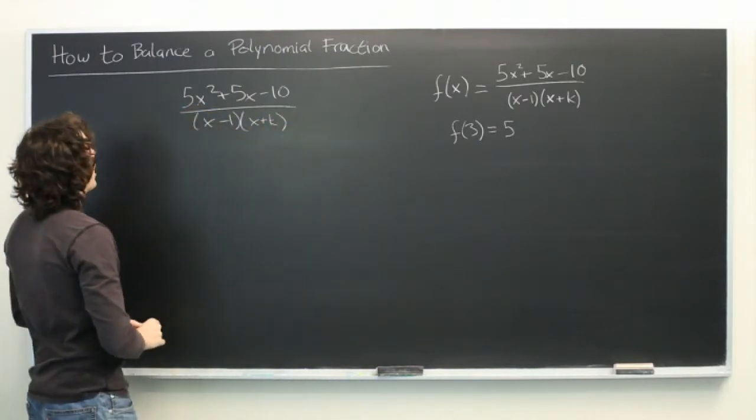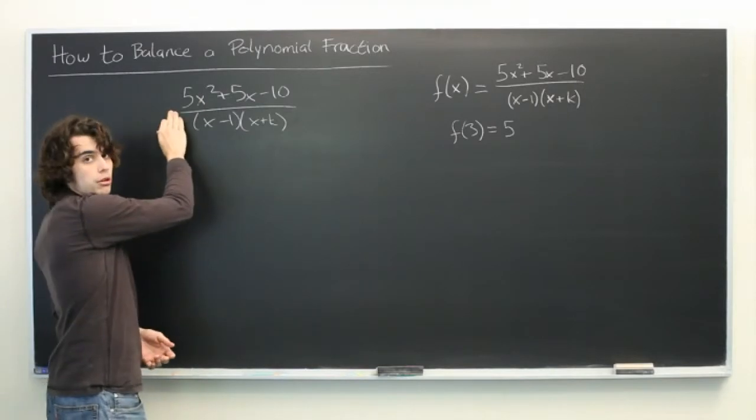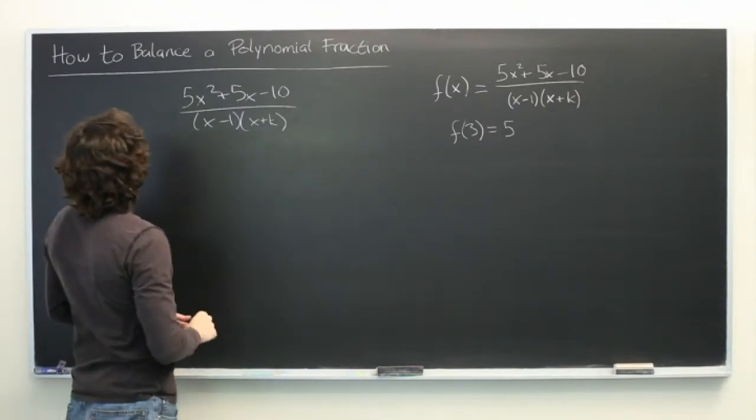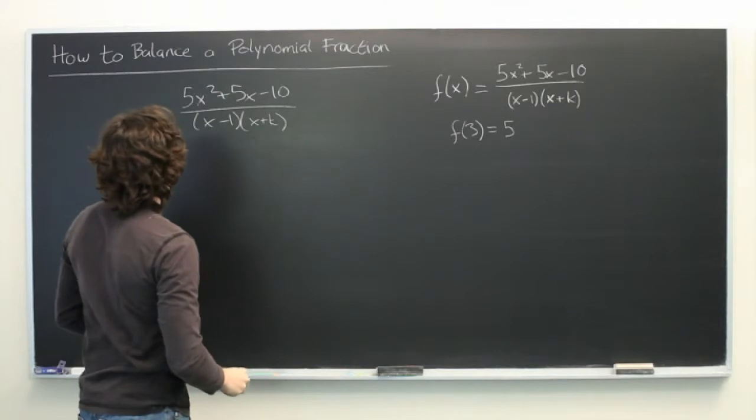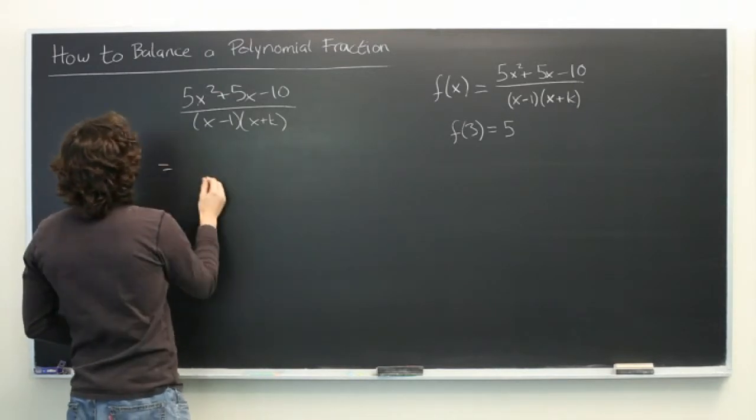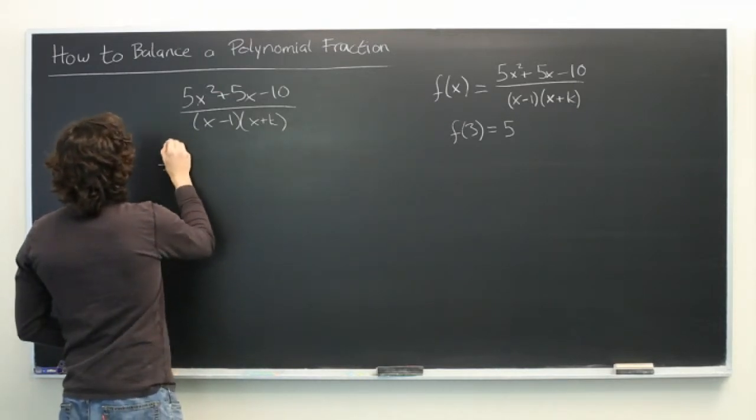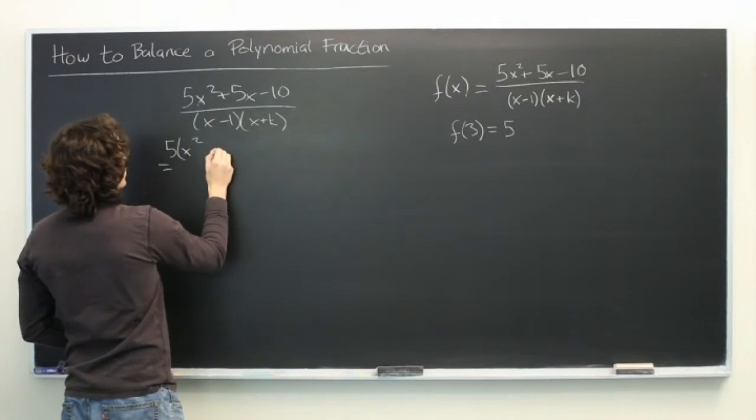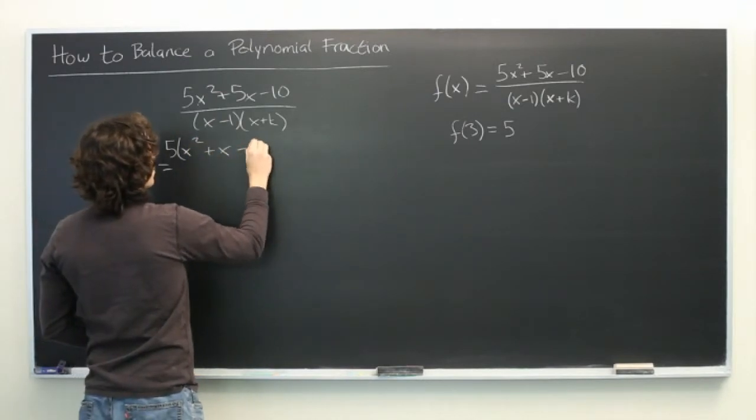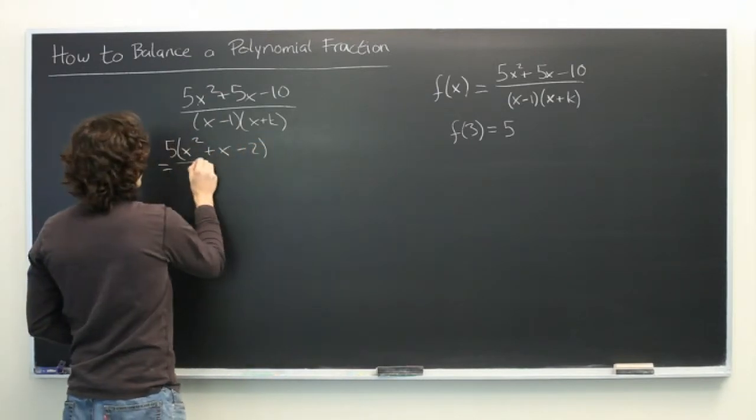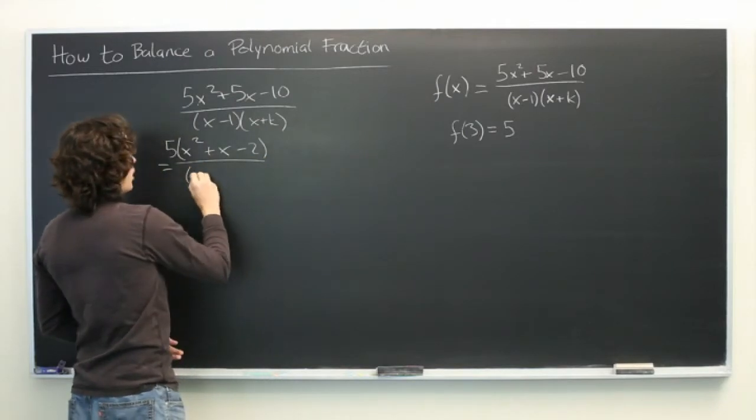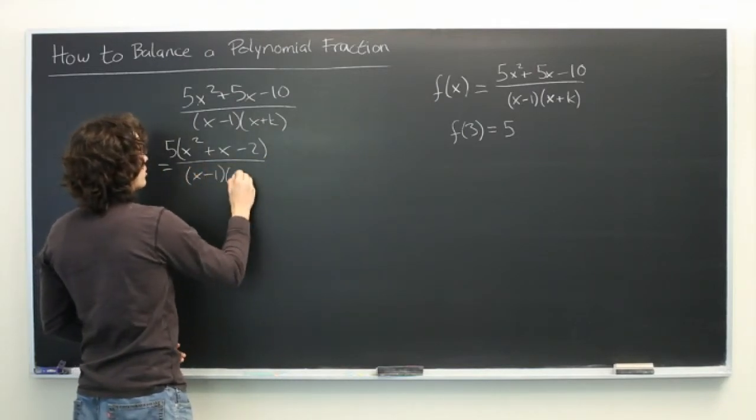Right off the bat we can see that all the terms in the numerator are multiples of 5, so we'll pull that out. We get 5 times (x squared plus x minus 2), again over (x minus 1) times (x plus k).